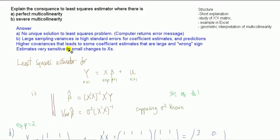It's still BLUE, supposing we don't have exact perfect multicollinearity. Because unbiased and best are words to do with repeated sampling — we are saying that in any one sample, we're going to get pretty erratic estimates from one sample to the next. But in the long run, if you average all that out, it'll pretty much be unbiased and efficient.